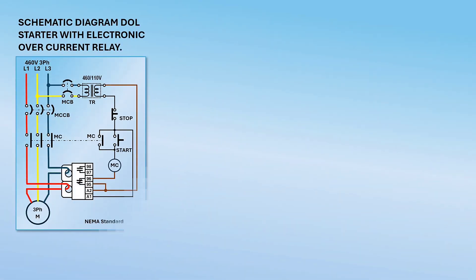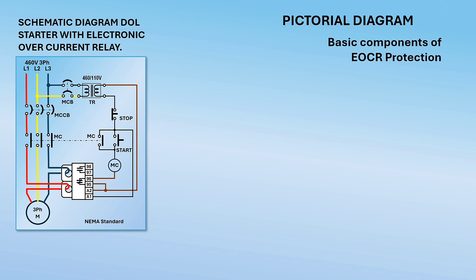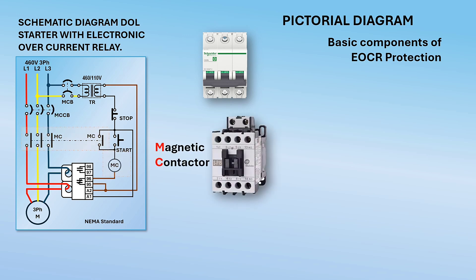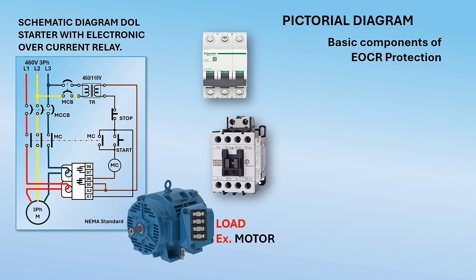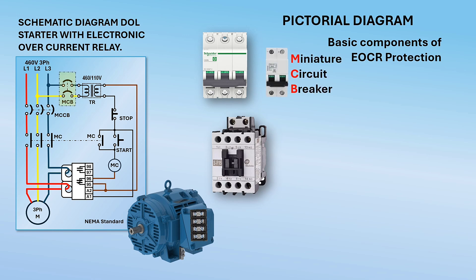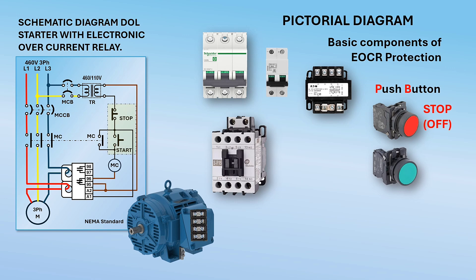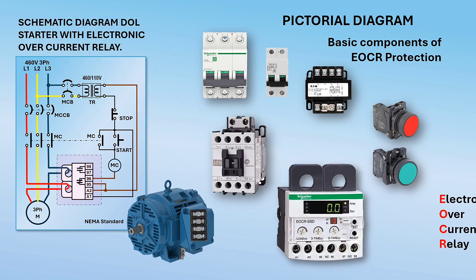Here is the schematic diagram using NEMA standard. Let us assemble a simple across-the-line DOL starter with an EOCR and other components that will complete the motor starter: molded case circuit breaker, magnetic contactor, the load — a three-phase motor, miniature circuit breaker, isolation or step-down transformer, start and stop push buttons, and the EOCR or electronic overcurrent relay.